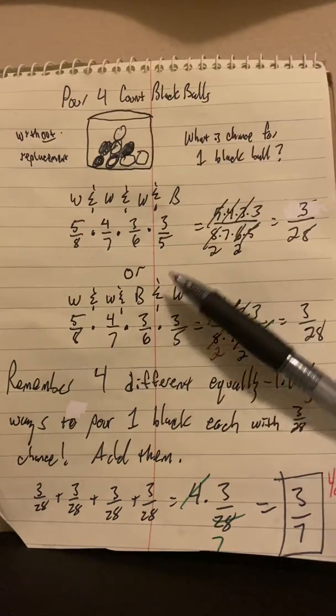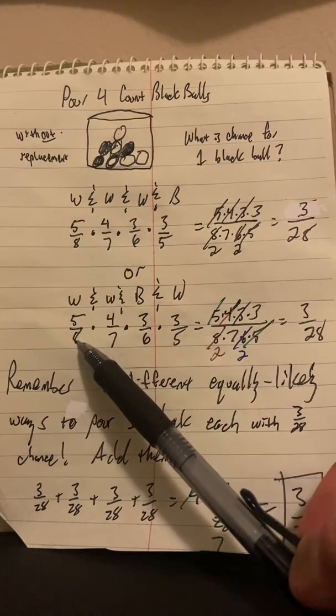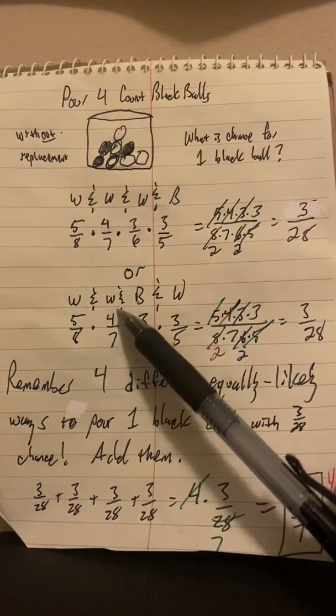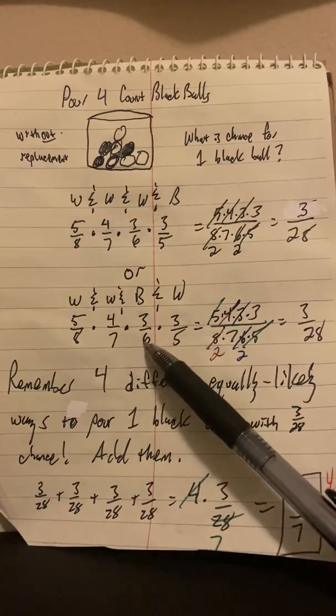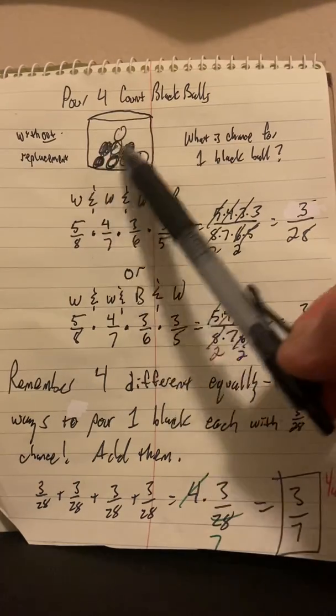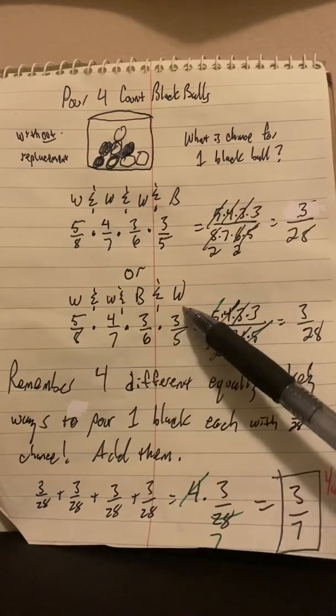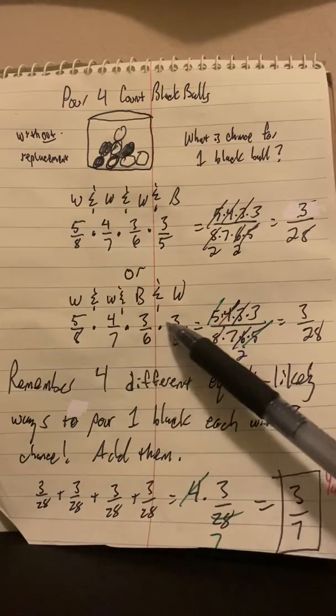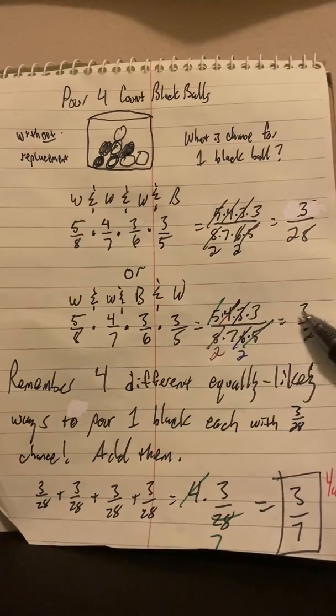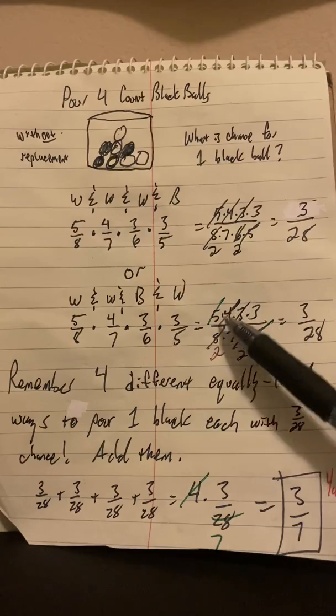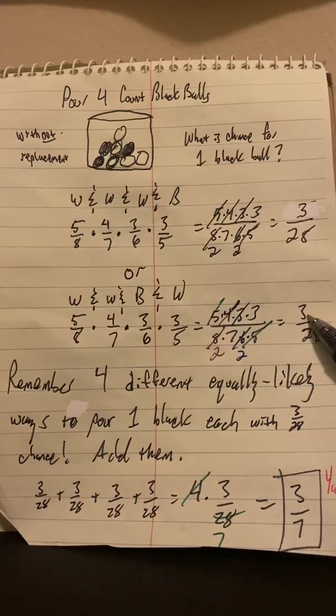Or another way that we could get one black is if we went white and white and black and white. Now notice what happens when you think this out. There's five and eight chances on the first draw to get a white. There's four because there's four whites left after you take one out and seven balls left after you take one out. So four and seven chances to get a white. But right now it's down to six. We're drawing the one of the three blacks. There's the three and six chance. And after we draw out the black, we want to get a white again. We've only taken out two. So there's still three left after five. Notice our numerator is exactly the same numerator. The denominator is exactly the same. So if we cancel the five with a five and four goes down to eight twice and three goes down to six twice, we have seven times four is 28 is our denominator and our numerator is three, the same as before.